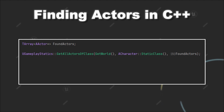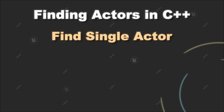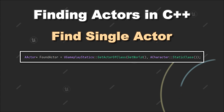That means you can easily iterate over them using a ForEach loop and then proceed as you like. However, if you want to find only one specific Actor — for example if only one instance of this Actor class exists in your level — then you can use GetActorOfClass, which will return a pointer to the first Actor that was found that meets the criteria.